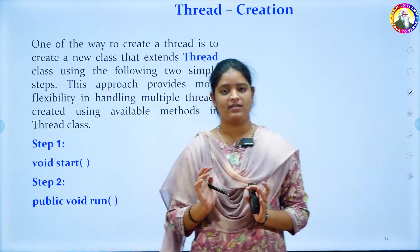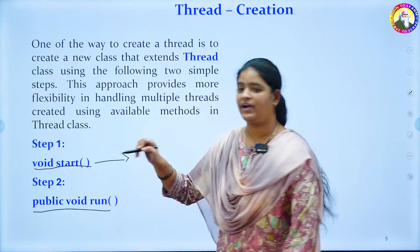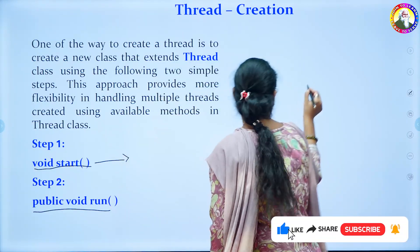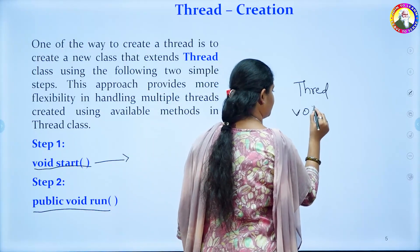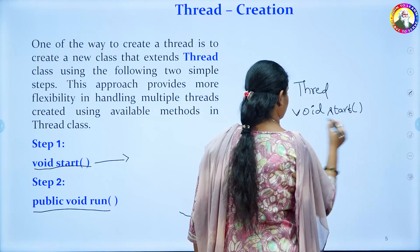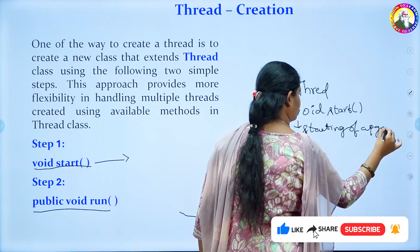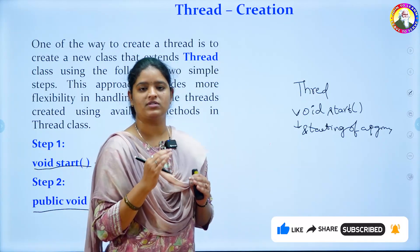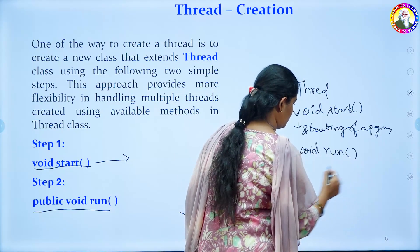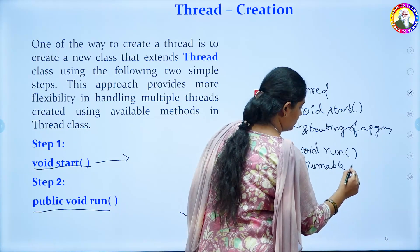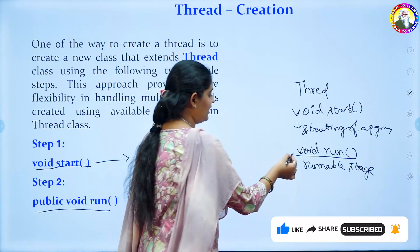If you want to start a thread, you have to use the first method, that is void start. The second is public void run. If you want to start a thread, you have to call the method void start for starting the program. If you want to hold the thread and make it a runnable stage, you have to use void run. This void run can be for the runnable stage or non-runnable, something like the waiting stage also.